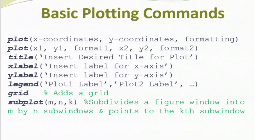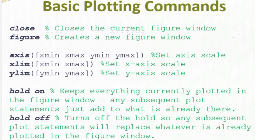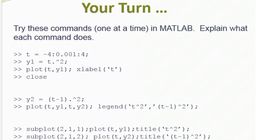Here's a summary of some of the basic plotting commands we've talked about, and here are some others you might find useful. You can close a figure window or create a new figure window. The axis command and xlim and ylim allow you to adjust the scale on the various axes. Hold on allows you to keep what is currently plotted in your figure window and add more things to that plot. Practice time — try each of these commands in MATLAB and make sure that you understand what these commands are doing.